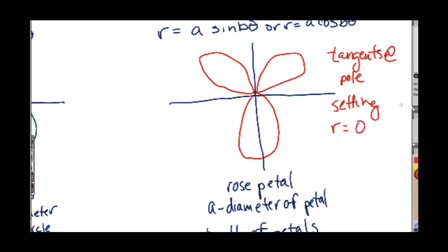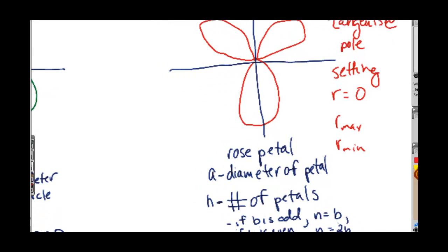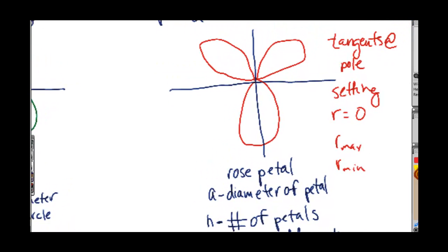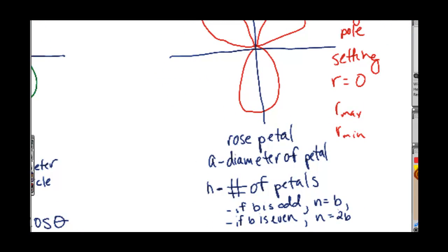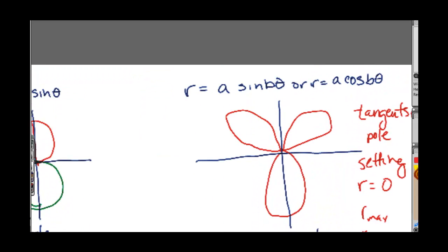Then after that, you're going to set it equal to r max and r min. And I'm going to go through a video for each of these, except for probably the circles. I might jumble that in with one of the other ones. And then you're going to plot the petals.